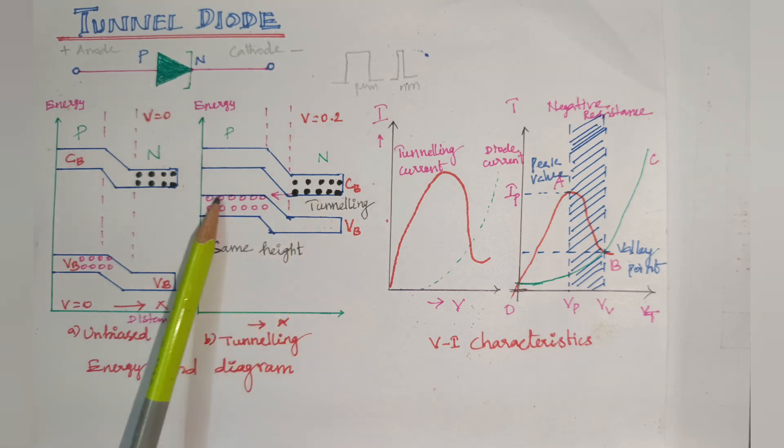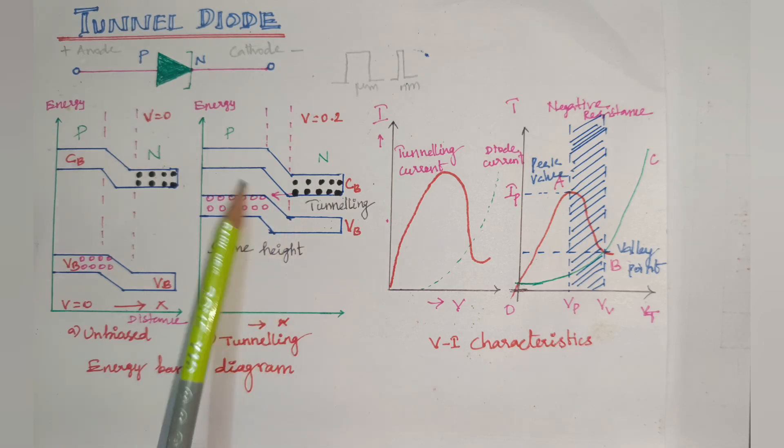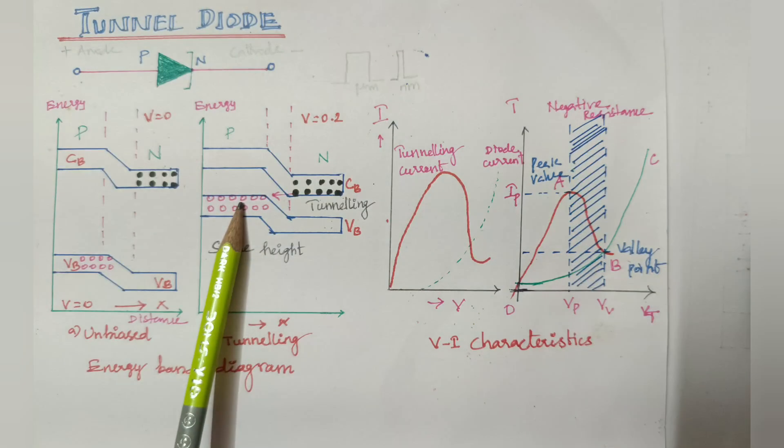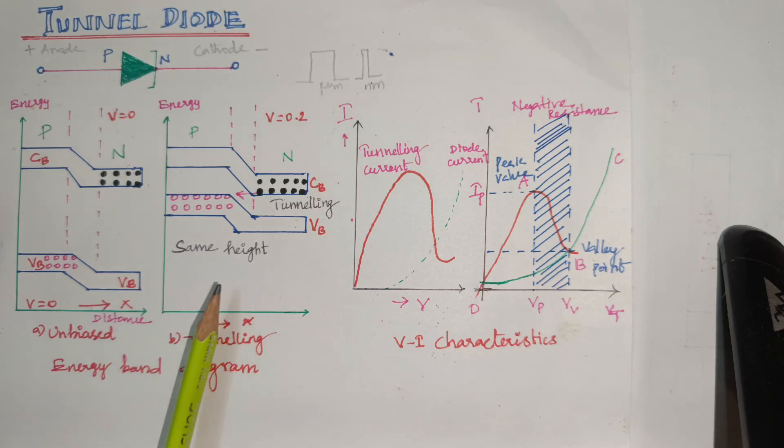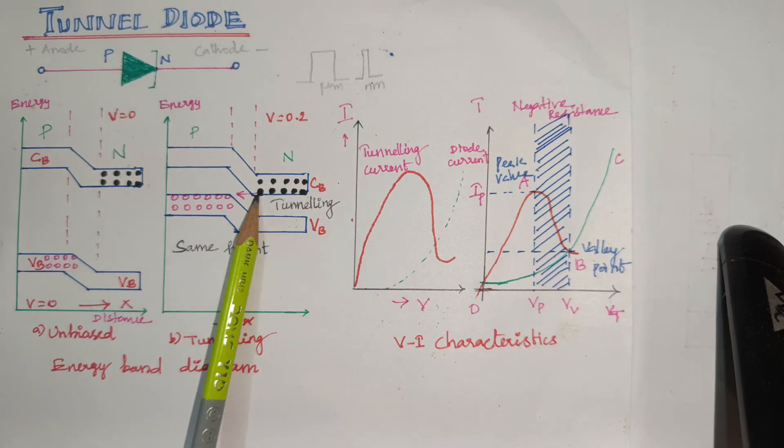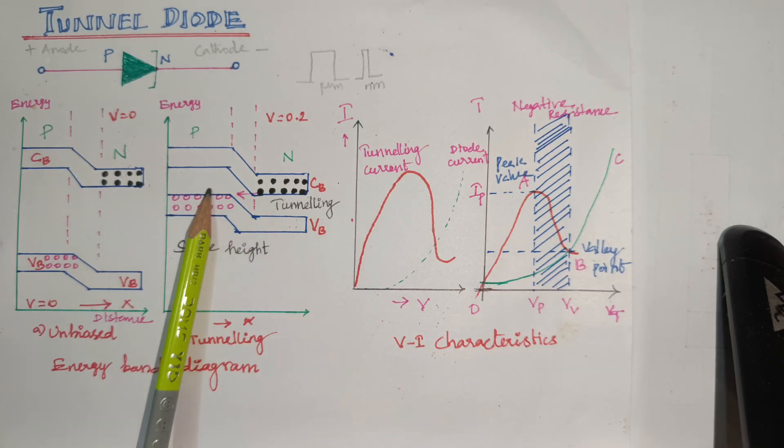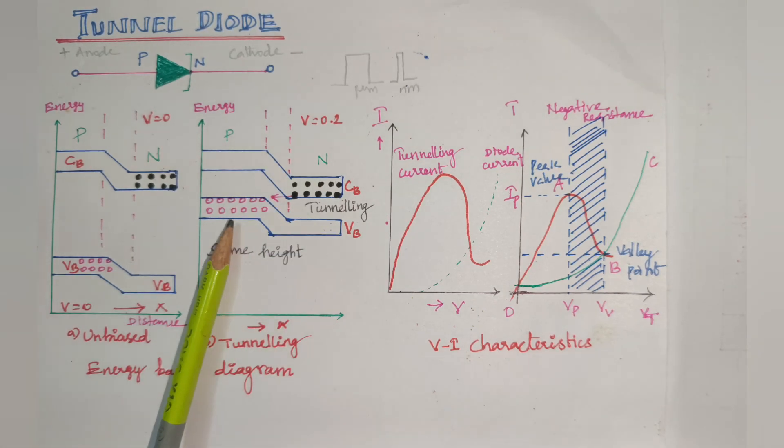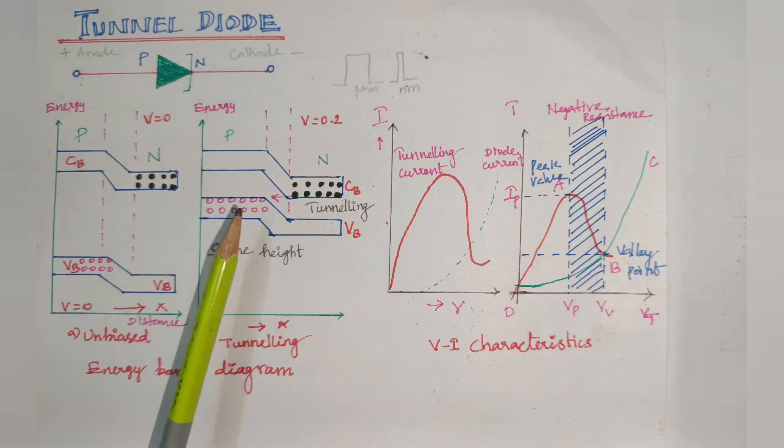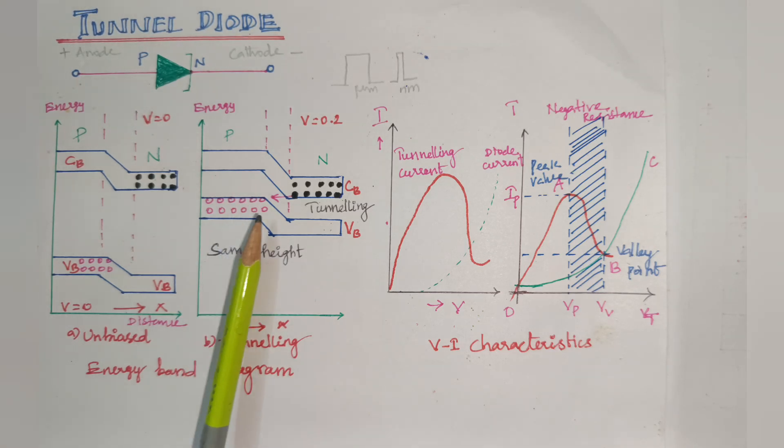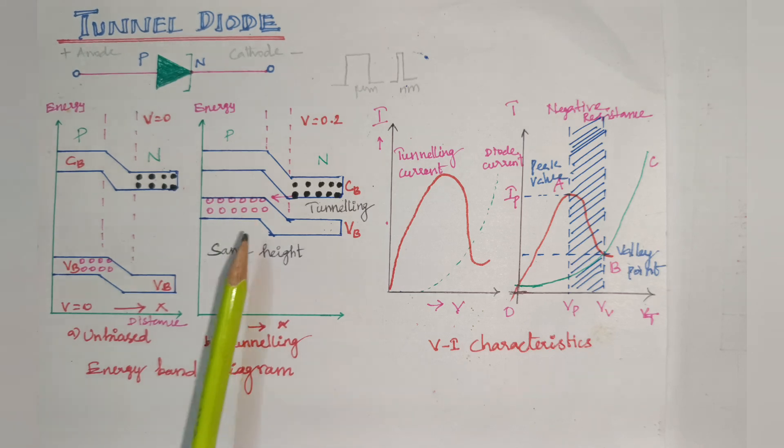As the voltage is further increased, the mismatch is also increased. Further increasing the current, the mismatch increases, so the current decreases. Why? Because of the valence band and conduction band mismatch. At a particular voltage, the current drops to minimum value.